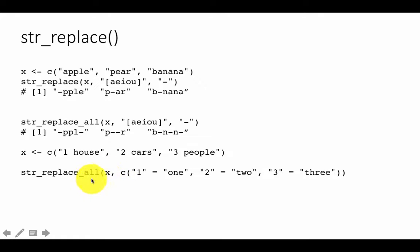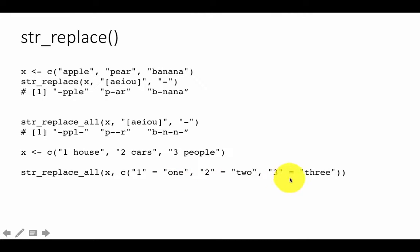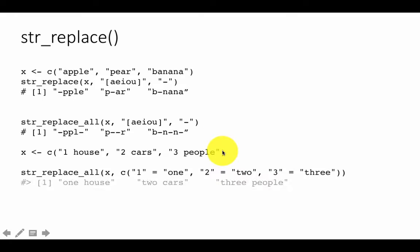So you are saying str_replace_all on x, and then you are saying replace '1' with O-N-E, '2' with T-W-O, '3' with T-H-R-E-E, etc. If you do that then you will find the result comes out as one house, two cars, and so on. That is also useful in text processing — str_replace is a very useful function.